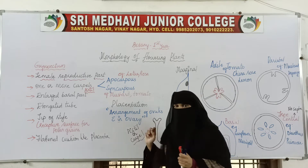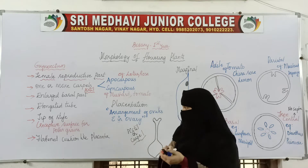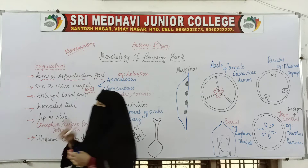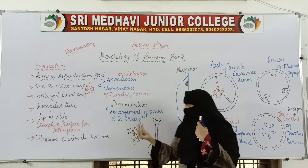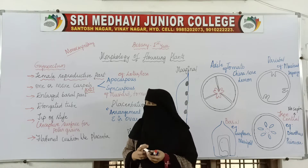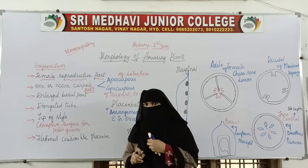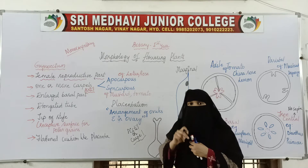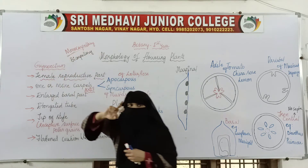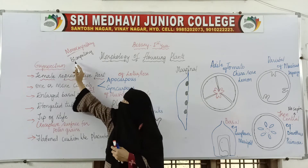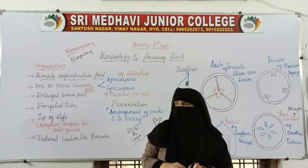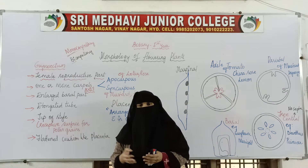If the gynoecium consists of only one carpel, that condition is called monocarpellary. If it has two carpels, that condition is called bicarpellary — 'mono' means one and 'bi' means two. If three carpels are present, it is called tricarpellary.